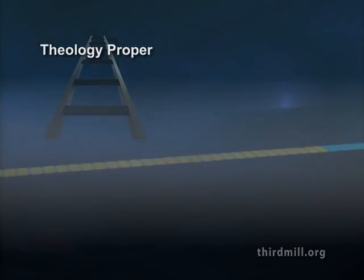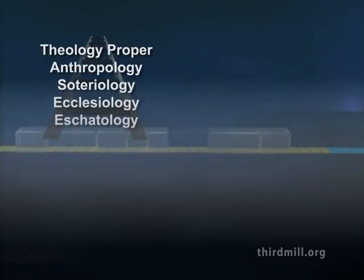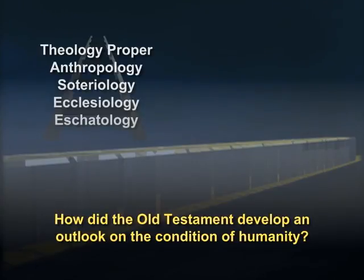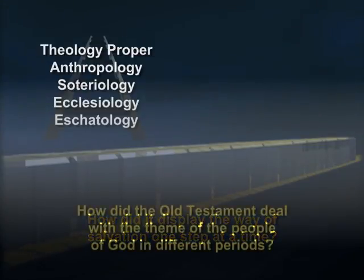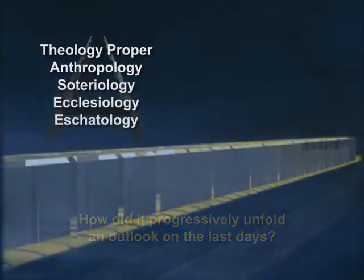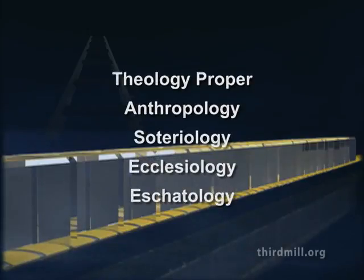In a similar way, biblical theologians have traced how aspects of anthropology, soteriology, ecclesiology, and eschatology developed through the Old Testament as well. How did the Old Testament develop an outlook on the condition of humanity? How did it display the way of salvation one step at a time? How did the Old Testament deal with the theme of the people of God in different periods? How did it progressively unfold an outlook on the last days? As biblical theologians have focused on each of these traditional topics, they have often discovered new insights that have been overlooked in traditional systematics. At times, they have even discovered ways that systematic theology should be corrected by biblical theology.